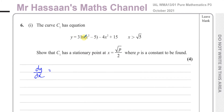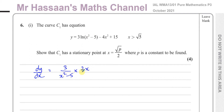When you differentiate something in the form of ln of a function, you get 3 divided by whatever's inside the ln, so it's 3 divided by (x squared minus 5), then multiply by the differential of what's inside using the chain rule — that gives 2x. So it's 3 times 2x over (x squared minus 5), minus 8x. The 15 becomes 0 as it's a constant.